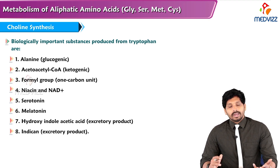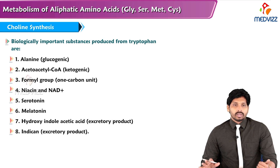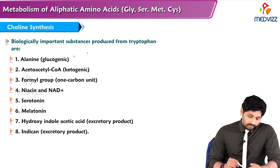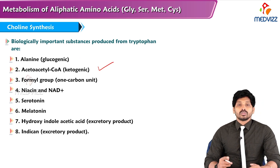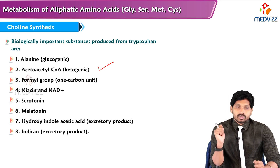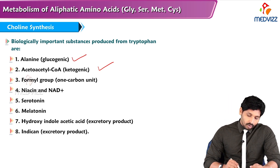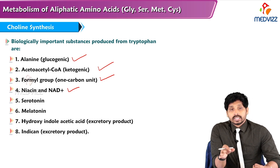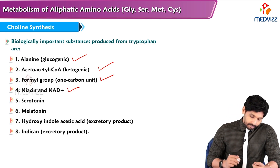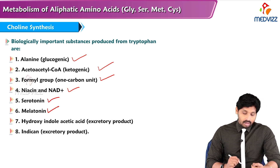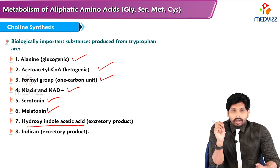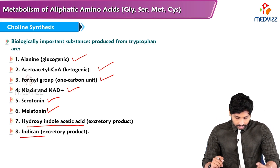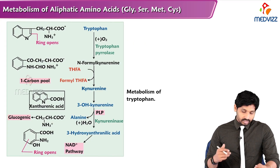As tryptophan is essential, we focus on its degradation — how it is catabolized in the body. While catabolizing, the important products formed from tryptophan include: alanine (glucogenic), acetyl-CoA (ketogenic) — so tryptophan is actually both glucogenic and ketogenic. It also contributes a one-carbon formyl unit, forms coenzyme B3 niacin and NAD+, the happy hormone serotonin, the pineal gland hormone melatonin, hydroxyindoleacetic acid (an excretory product), and indican (also an excretory product).